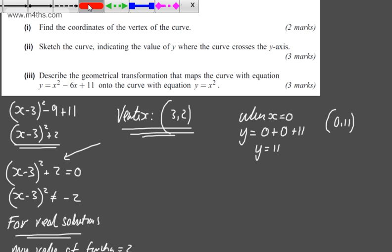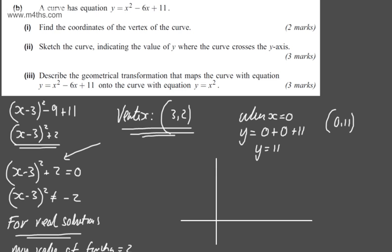Let's go ahead and quickly sketch this. We're going to have our minimum point at (3, 2) and on the y-axis this point right here will be (0, 11).